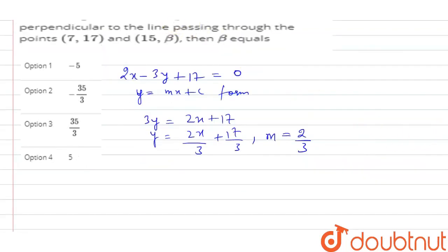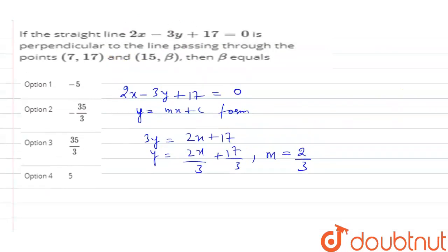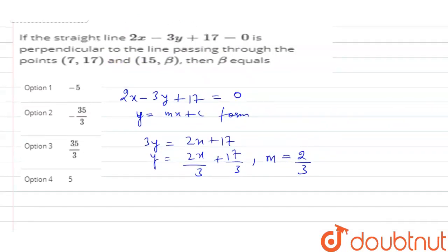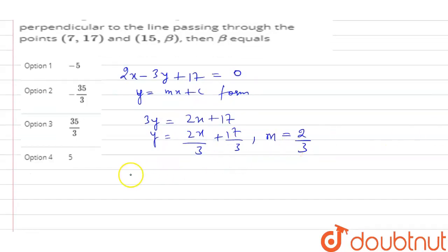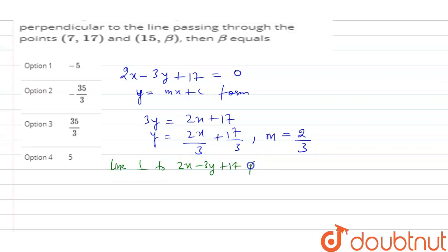Now, the points (7, 17) and (15, β) pass through the line that is perpendicular to the straight line. We know that the line perpendicular to 2x - 3y + 17 = 0 passes through (7, 17) and (15, β).